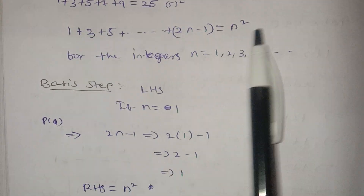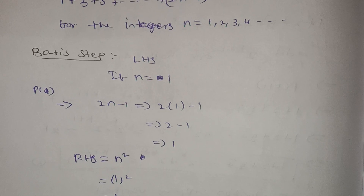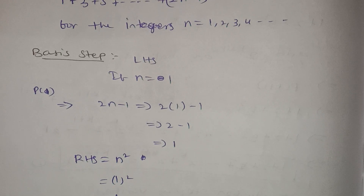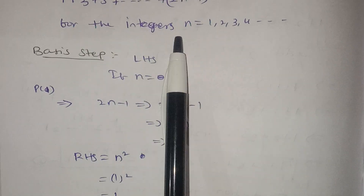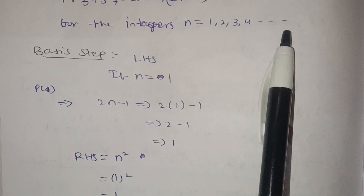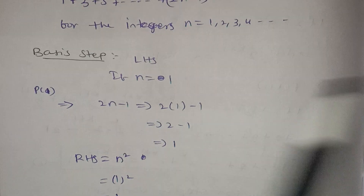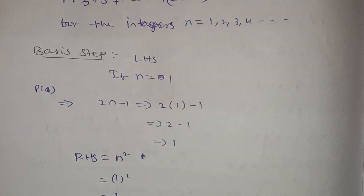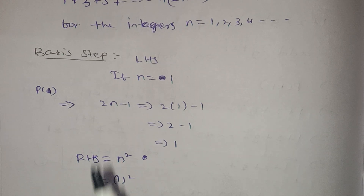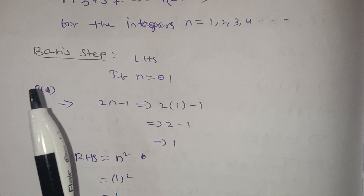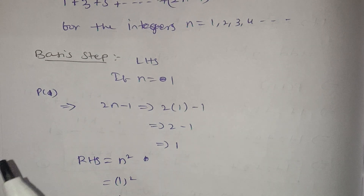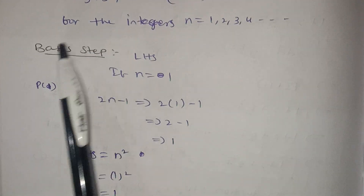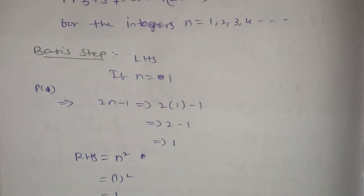We will prove this in the next part using mathematical induction. For integers n equals 1, 2, 3, 4... Mathematical induction has two steps: the base step and the inductive hypothesis, followed by the induction step.